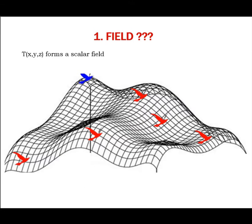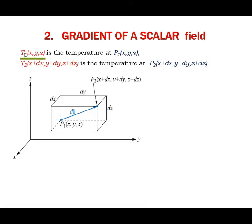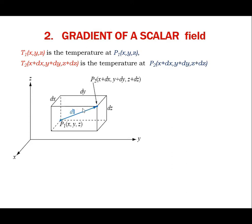Let us start with temperature distribution in space. The temperature T as a function of x, y, and z forms a scalar field. The value of temperature at each coordinate of space is different. Now the question is how to know the temperature at any point if it is known at a given reference point. You can do it easily if you have the information of the rate of variation of the field or temperature with space coordinates. Suppose T1 as a function of x, y, and z is the temperature at any point P1, and you want to know the temperature T2 at point P2. Let dl be the differential distance vector or displacement vector of point P2 with respect to P1. dl is given by this expression in terms of components dx, dy, and dz along all three mutually perpendicular directions.